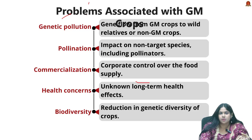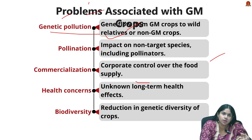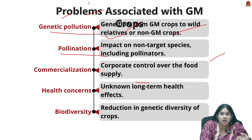Now let us see the problems associated with GM crops. First is genetic pollution — genes from GM crops can spread to wild relatives or non-GM crops through cross-pollination. This gene flow can generate genetic pollution where non-GM crops inadvertently acquire traits from GM varieties, threatening biodiversity and the purity of organic and traditional crop varieties.